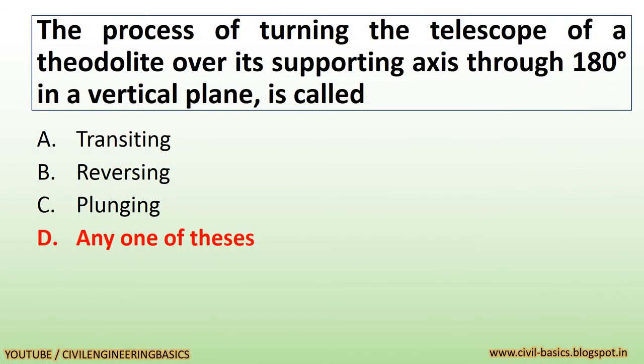The process of turning the telescope of a theodolite over its supporting axis through 180 degrees in a vertical plane is called transiting, also known as reversing or plunging.